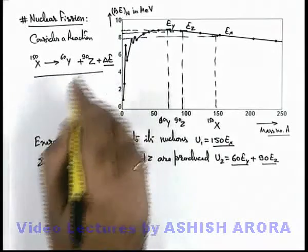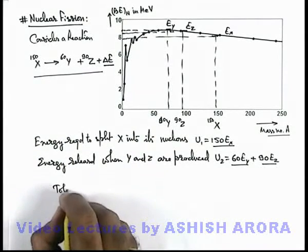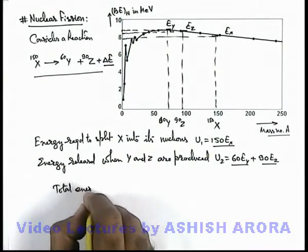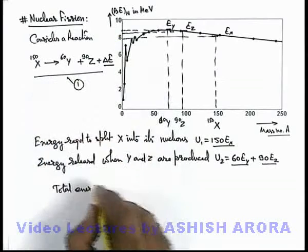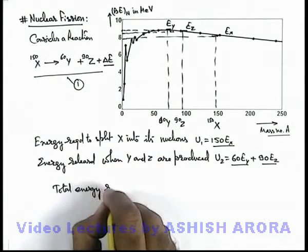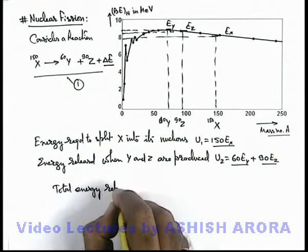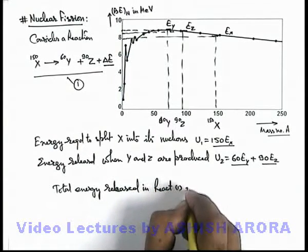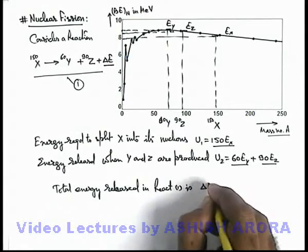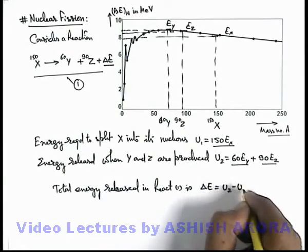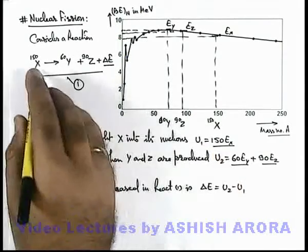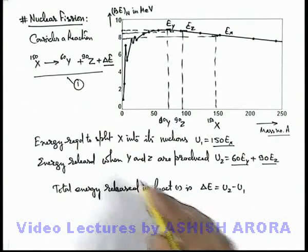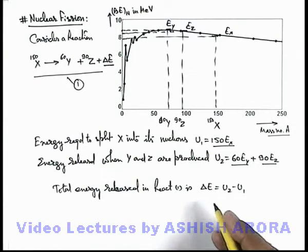So in this reaction, if we calculate the total energy released, if this is reaction 1, we can write total energy released in reaction 1 is this ΔE. We can write U2 minus U1, because U1 can be considered as activation energy to initiate the reaction.